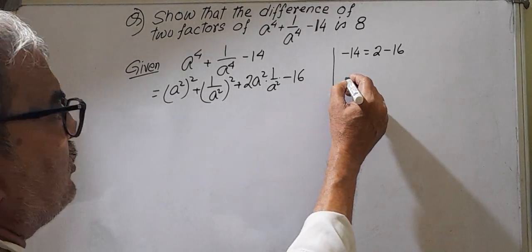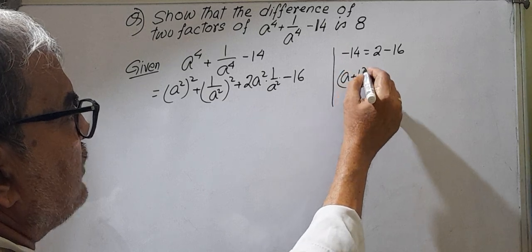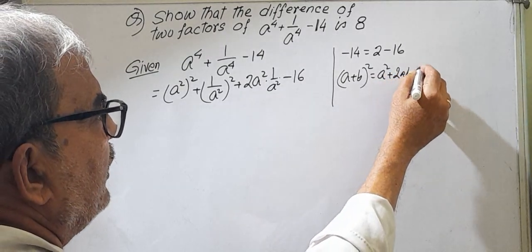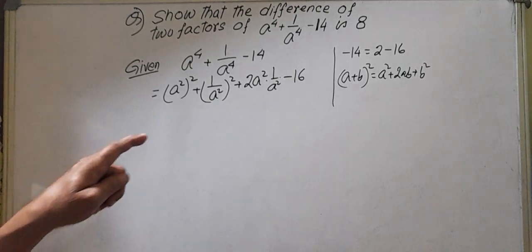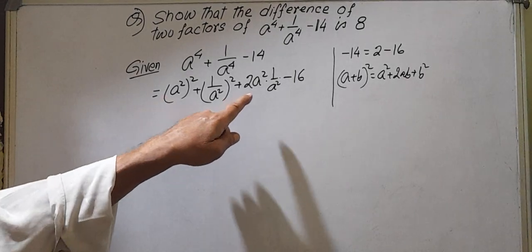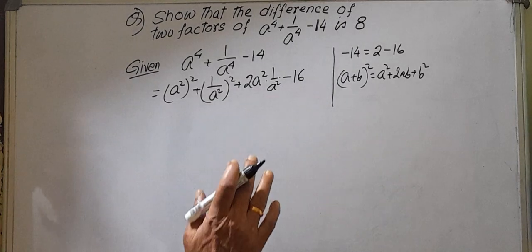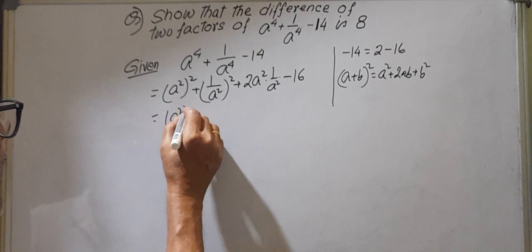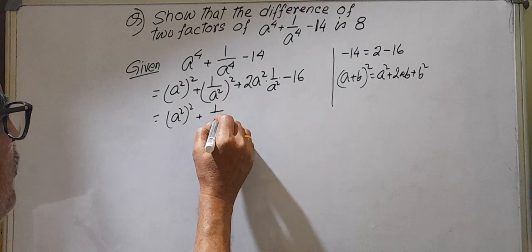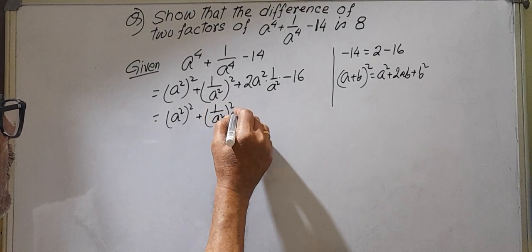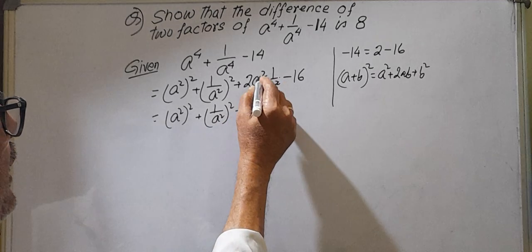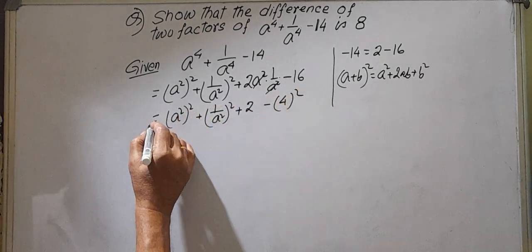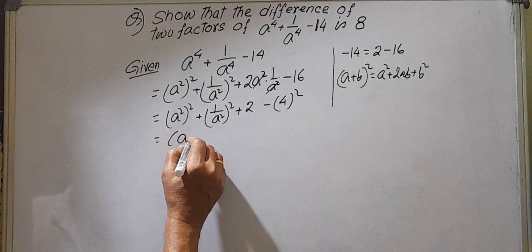A plus B whole square means A square plus 2AB plus B square. Now I have written this question in such a way: A square plus B square plus 2AB. And this is the whole square. Now you write it, this is the whole square again. One thing you write like this: A square whole square plus 1 by A square whole square plus here 2 into minus 4 the whole square.